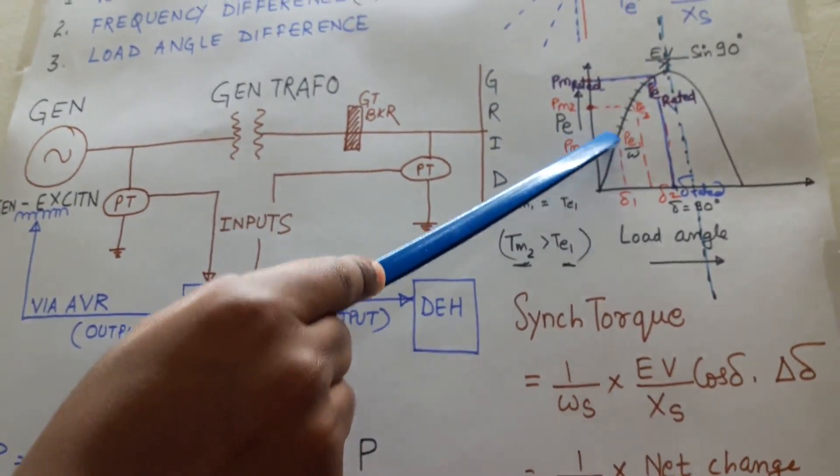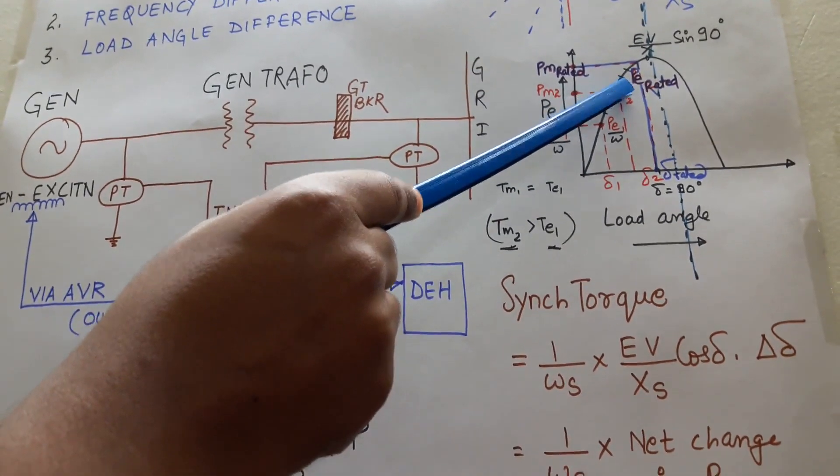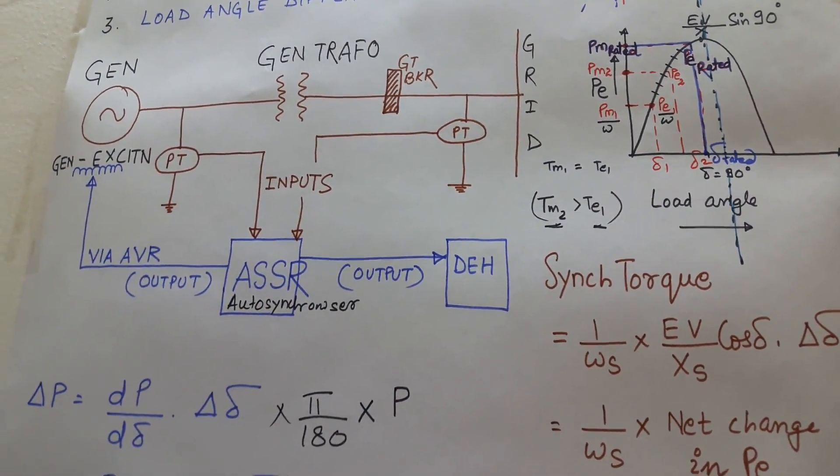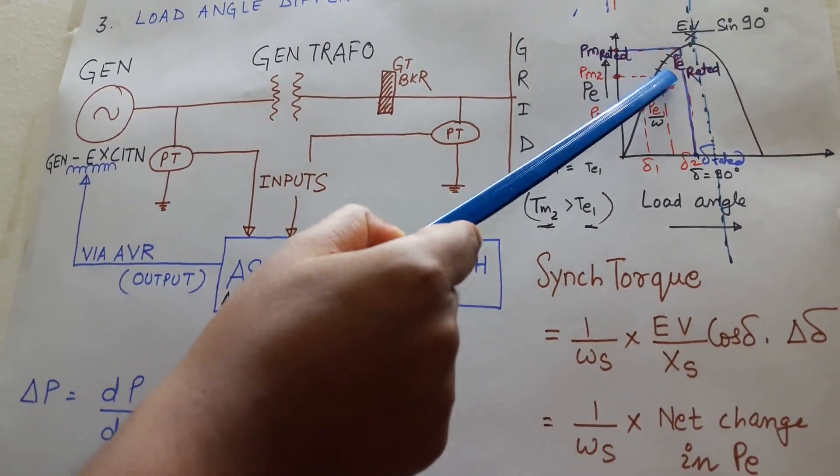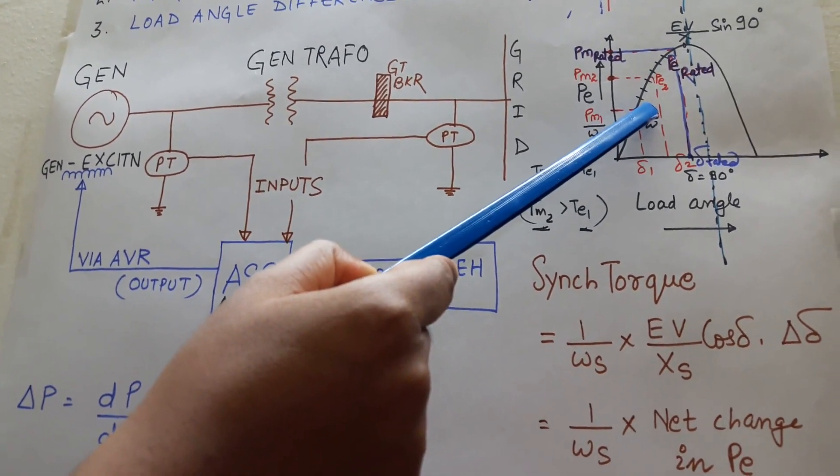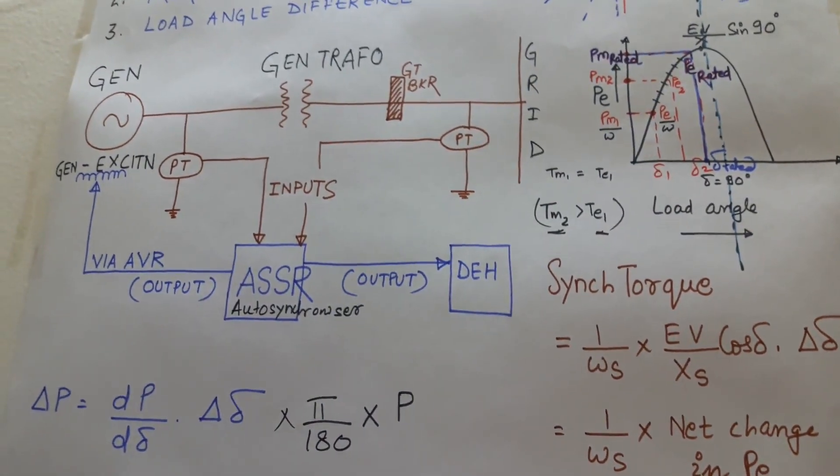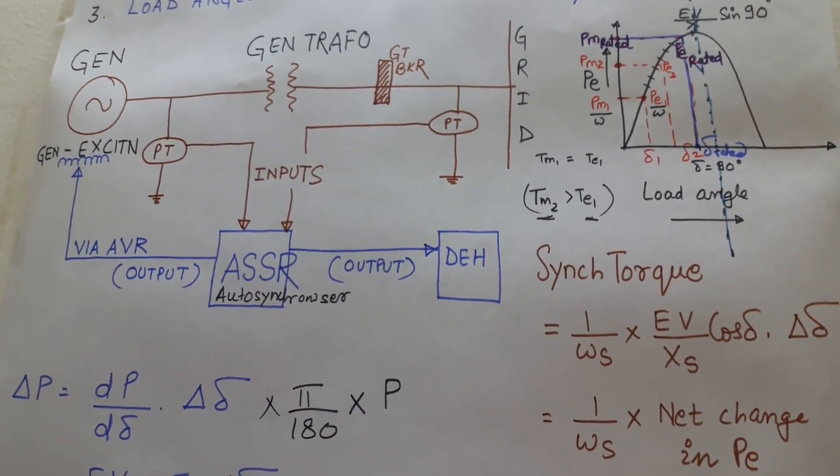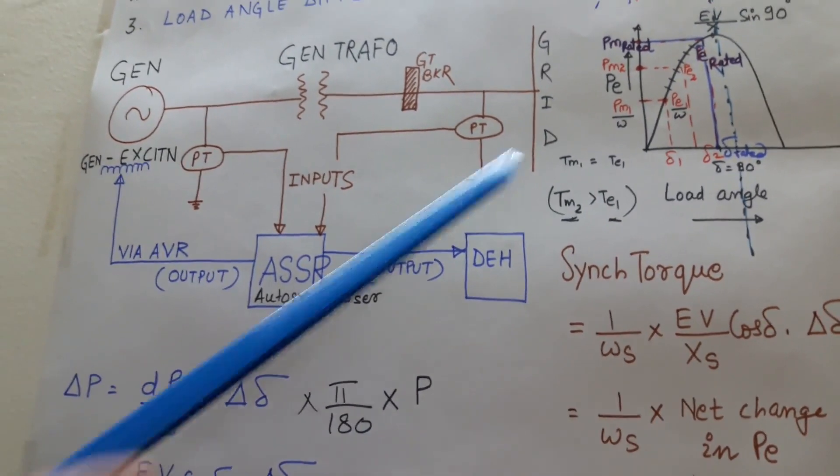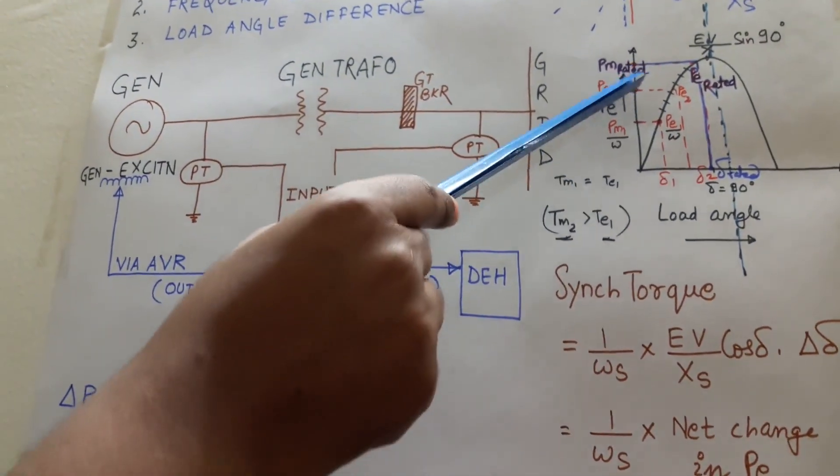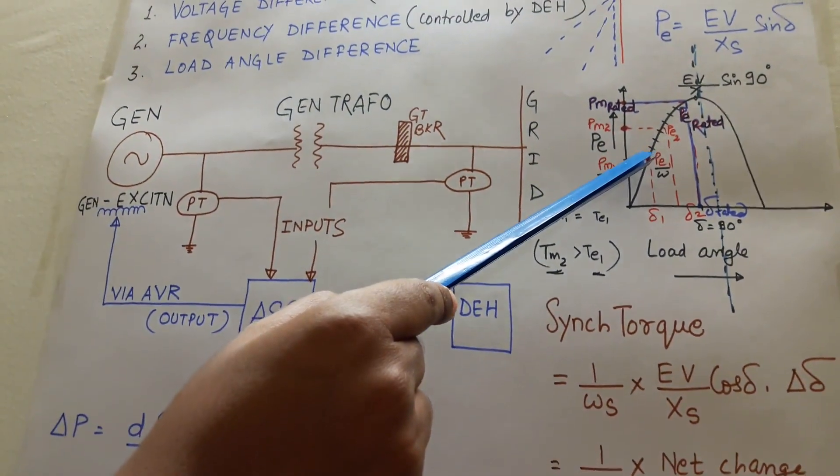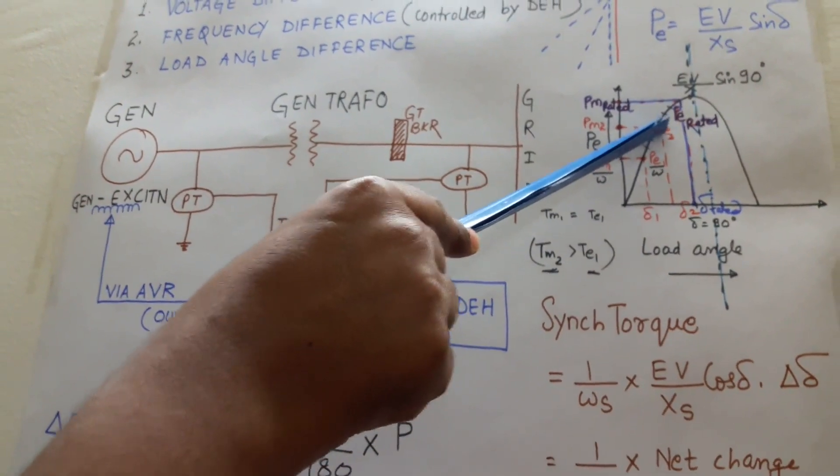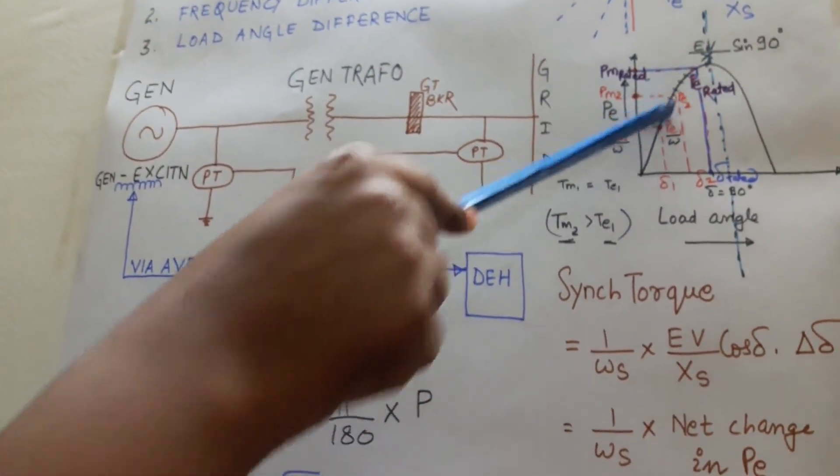And this change in electrical power is known as synchronizing power. So I can define synchronizing power as PE2 minus PE1, the change in electrical power, the change in active power of the generator to bring the generator into its steady state. So earlier it was in steady state, but suddenly when steam is increased, it lost its steady state condition. So the extra power required to bring it into the steady state condition is called as synchronizing power.